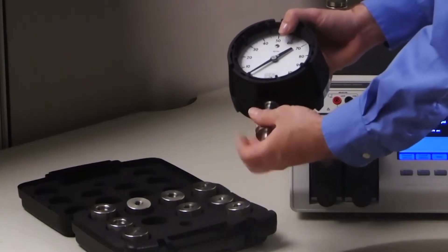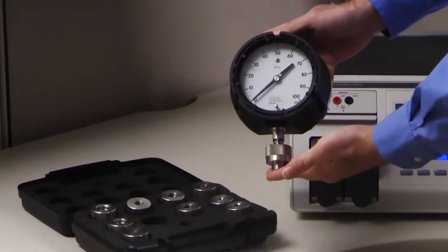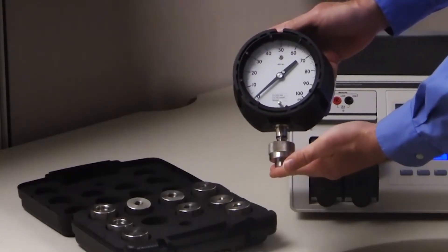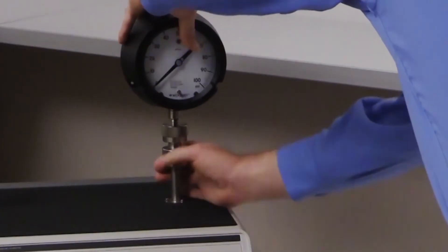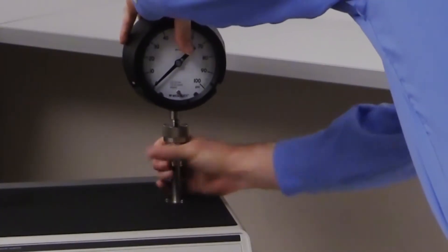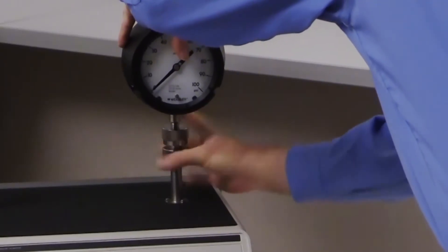Select the appropriate adapter for the gauge being tested. The adapters seal on an O-ring, so no PTFE tape or tools are required. Next, attach the adapter and gauge to the test port. The test port swivels, making it easy to ensure the gauge faces forward.